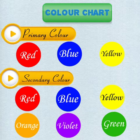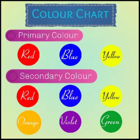This is the color chart. Primary colors: red, blue, yellow. Secondary colors: red, blue, yellow, orange, violet, and green. These are the secondary colors. This is the color chart.